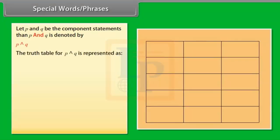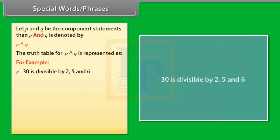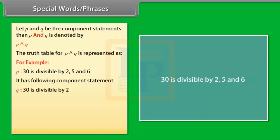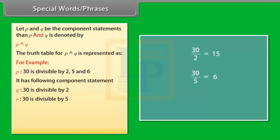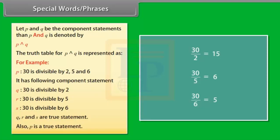The truth table for P AND Q: P true and Q true → P and Q is true; P true and Q false → P and Q is false; P false and Q true → P and Q is false. For example, P is the statement '30 is divisible by 2, 5, and 6.' Its component statements are: Q — 30 is divisible by 2; R — 30 is divisible by 5; S — 30 is divisible by 6. Q, R, and S are all true statements; therefore P is a true statement.